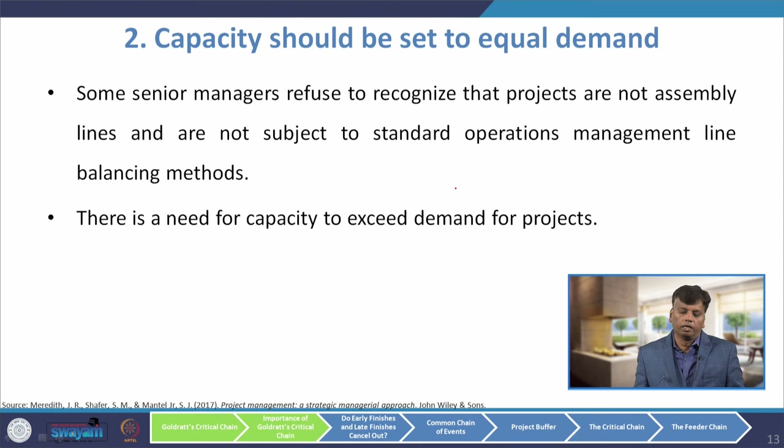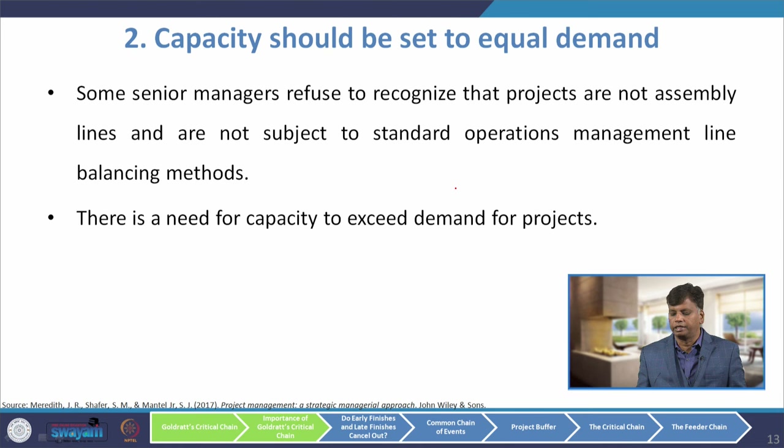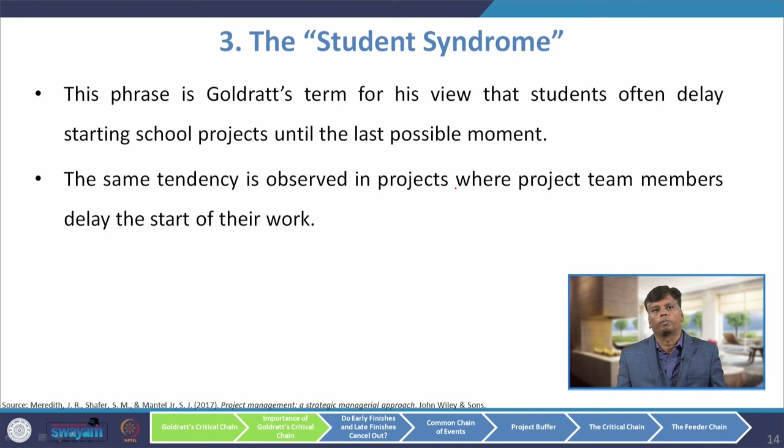The second reason for optimistic bias is that capacity is set equal to demand. Some senior managers refuse to recognize that projects are not assembly lines and are not subject to standard operation management line-balancing methods, because each project would not be linear in nature. There is a need for capacity to exceed demand for projects, and sometimes we have to extend our capacity whenever demand exceeds that point.